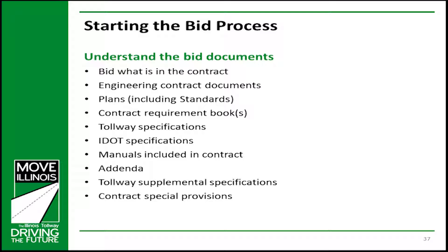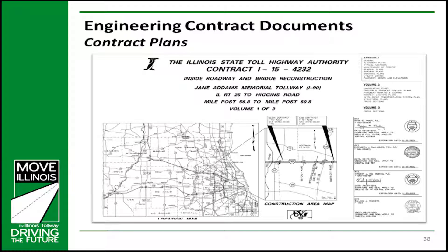Engineering contracts typically consist of the following documents: plans, contract requirements books, tollway specifications, IDOT specifications, manuals included in the contract, addenda, tollway supplemental specifications, contract special provisions, and contract plans. The term 'contract plans' is commonly used to designate the drawings incorporated into the contract documents. Applicable tollway and IDOT standard drawings are included with the contract drawings.